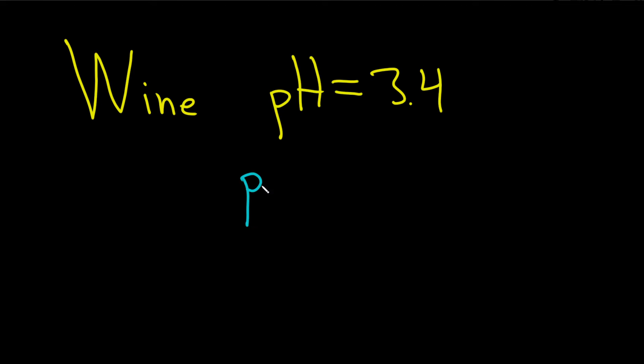So the formula that we use is this one. pH equals negative log of what we're looking for, which is this thing here, the H3O plus, the hydronium ion concentration.